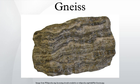Gneiss rocks may also be named after a characteristic component, such as garnet gneiss, biotite gneiss, albite gneiss, etc. Ortho gneiss designates a gneiss derived from an igneous rock, and paragneiss is one derived from a sedimentary rock.